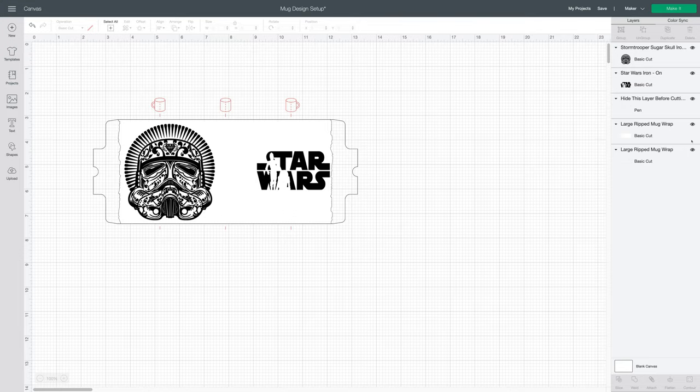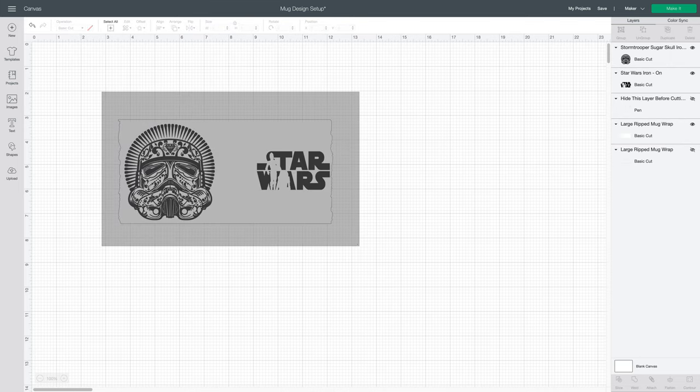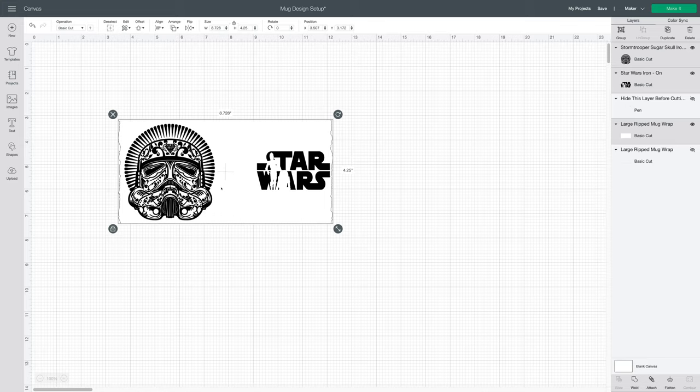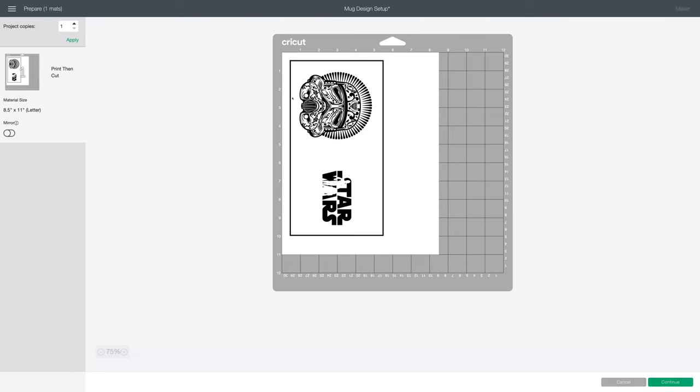You want to make sure that you're staying within these torn edges or within your edge. We'll go over to the layers panel. I'm going to turn off hide this layer and turn off large ripped mug wrap. All I'm left with is the background and the images I want to sublimate. I'm just going to drag around these all together, right click and flatten. Send to make it and you see it's going to cut out the perfect size to fit my mug. Never forget to mirror.